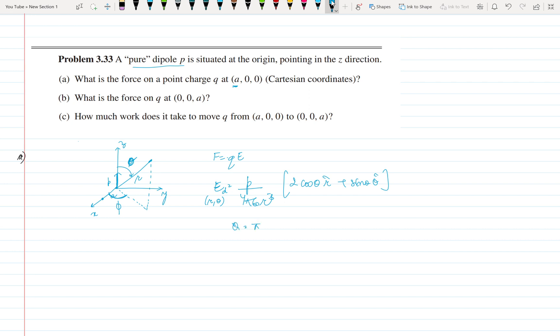Theta should be pi by 2, because the plane is perpendicular to X axis, that's why theta is pi by 2, because it makes angle 90 degree with Z axis.